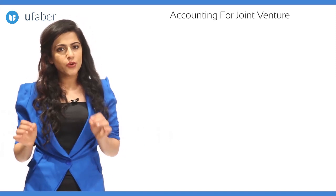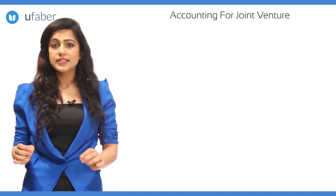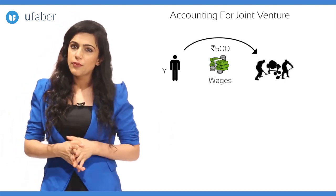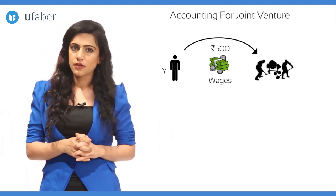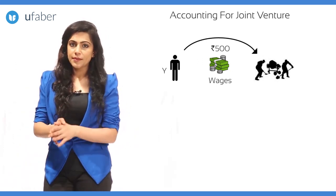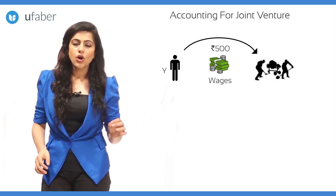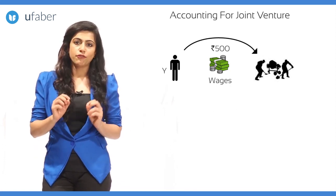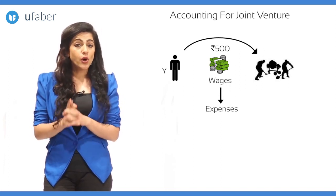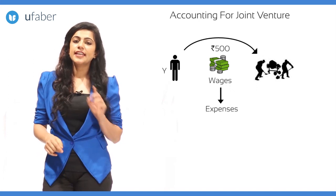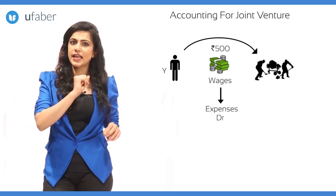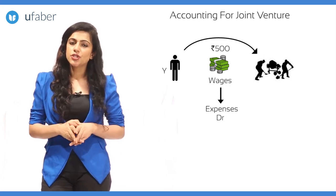For small decoration work on this contract, Y also paid rupees 500 as wages to a labourer from his own pocket. The wages paid by Y are for the work of the joint venture, therefore it is an expense to the joint venture. The golden rule for nominal account is debit all expenses and losses, credit all incomes and gains. Hence we debit joint venture account.